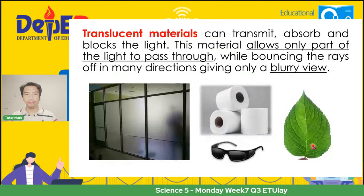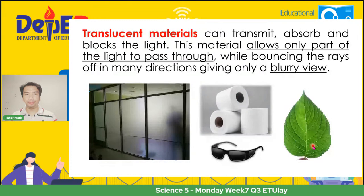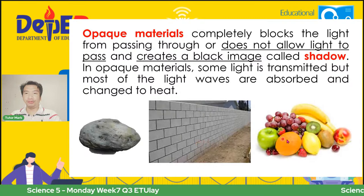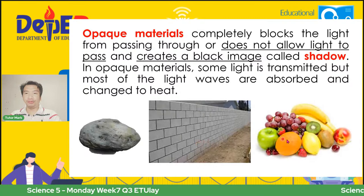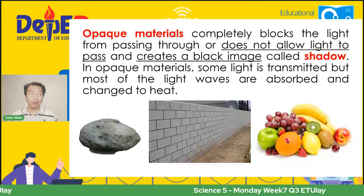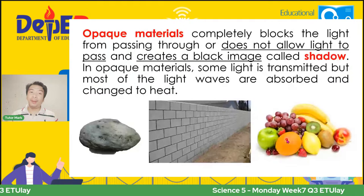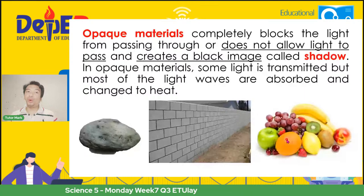And lastly is the opaque. Opaque materials completely block the light from passing through or do not allow light to pass through. Therefore, it creates a shadow. Most of the materials around us are actually opaque materials — kagaya ng semento, mga blocks, at maging ang prutas. That's why they have a shadow. Ito ang tatlo nating tatandaan: when light passes through completely, it's transparent; if somewhat blocked, that's translucent; kung totally blocked, that is opaque. Is that clear?